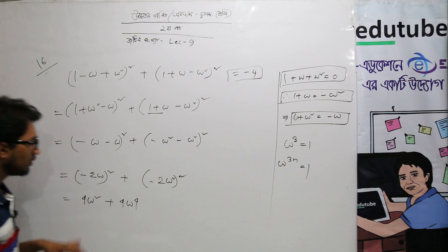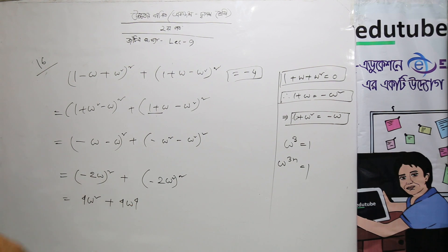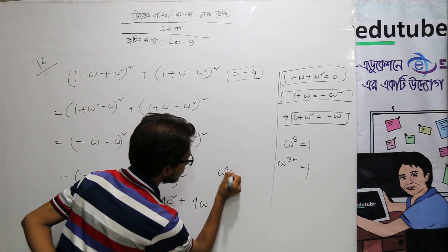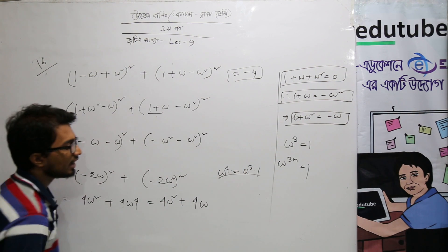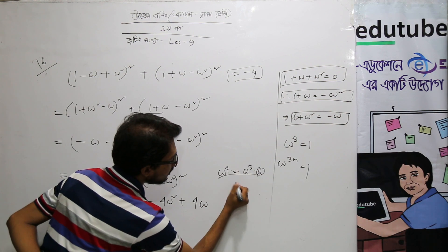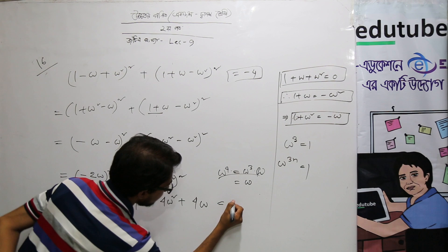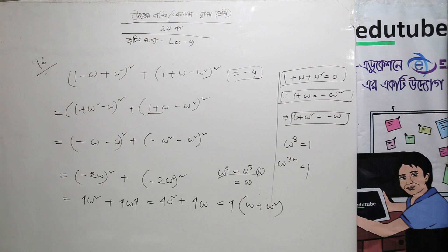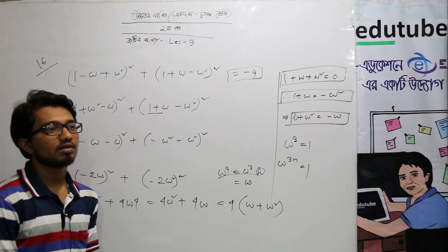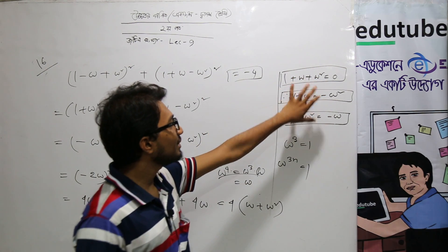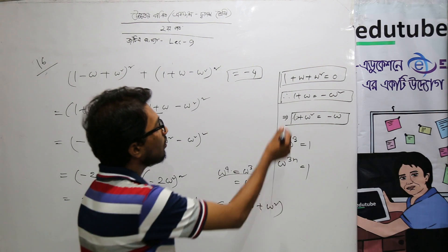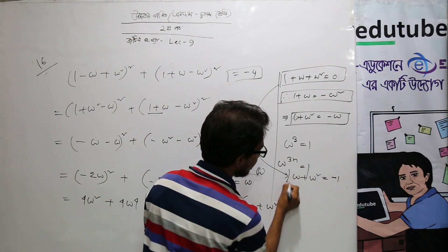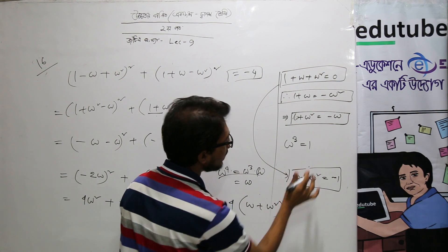4 omega to the power 4. Calculate: 4 omega squared plus 4 omega to the power 4, which is 4 omega squared plus 4 omega. We get 1 minus omega squared plus omega squared. Then 5 plus omega squared equals 2 minus 1. And 5 minus 1 plus omega squared equals minus 1.